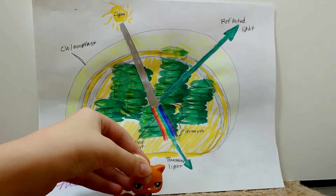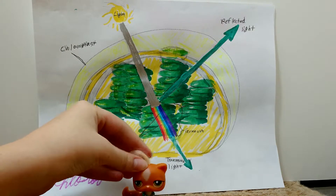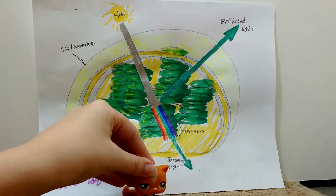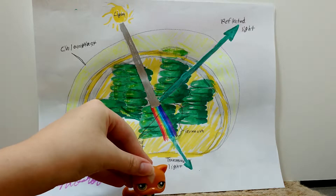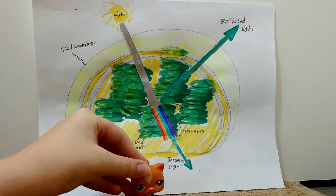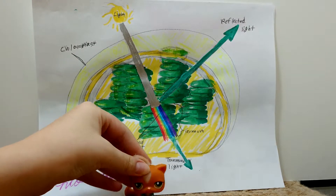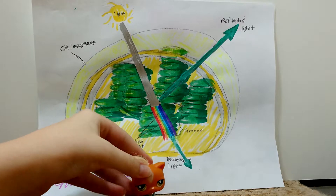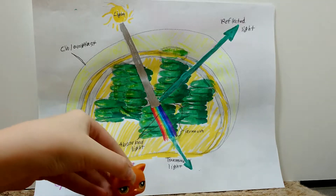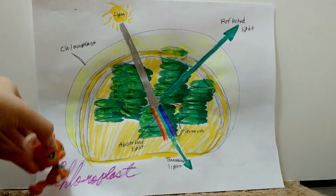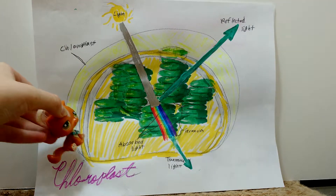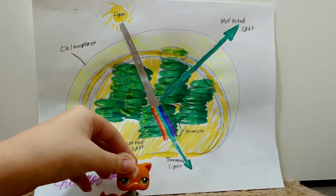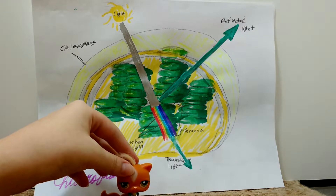Hello everyone, and today we'll be learning about photosynthesis. Photosynthesis helps plants make their own food, and it happens in the chloroplast found in plant cells.